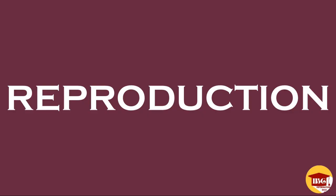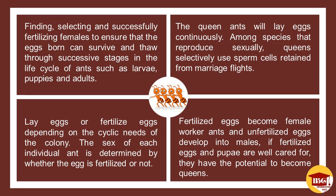Third, ant reproduction is a complex phenomenon that involves finding, selecting, and successfully fertilizing females to ensure that the eggs born can survive through successive stages in the life cycle of ants such as larvae, pupae, and adults. The queen ants will lay eggs continuously. Among species that reproduce sexually, queens selectively use sperm cells retained from mating flights, and lay or fertilize eggs depending on the cyclic needs of the colony.